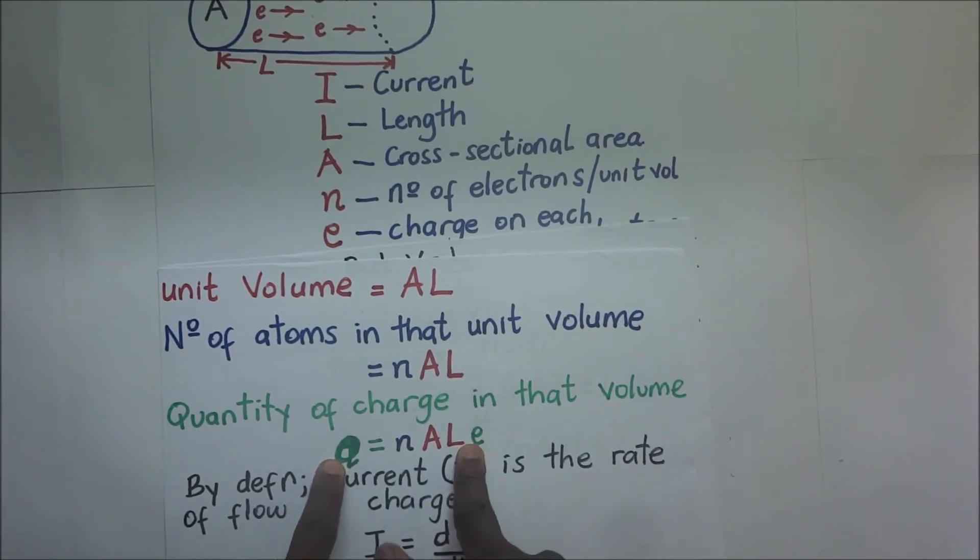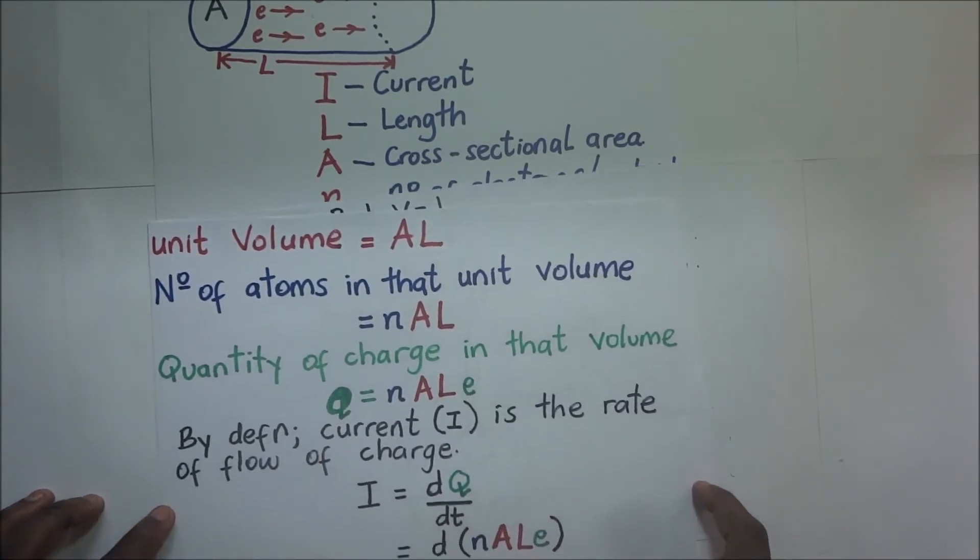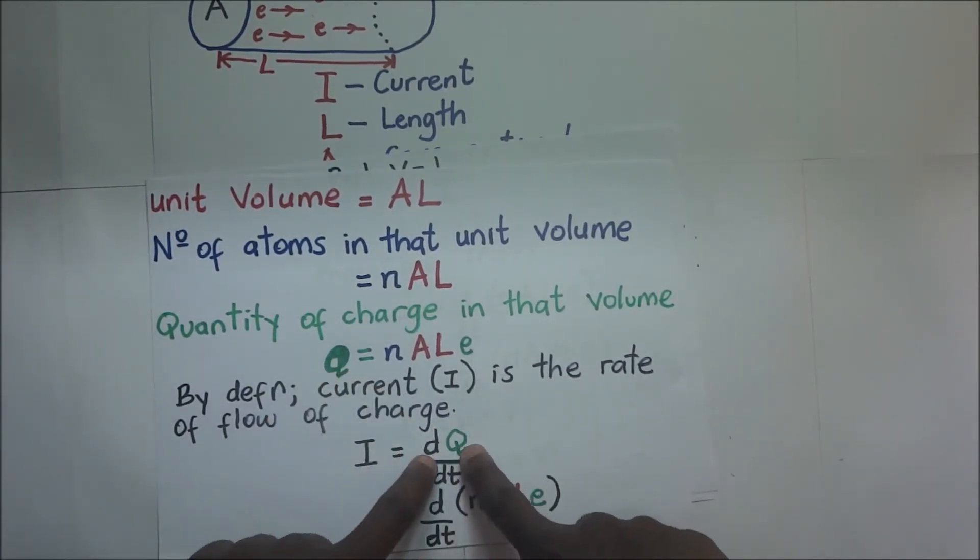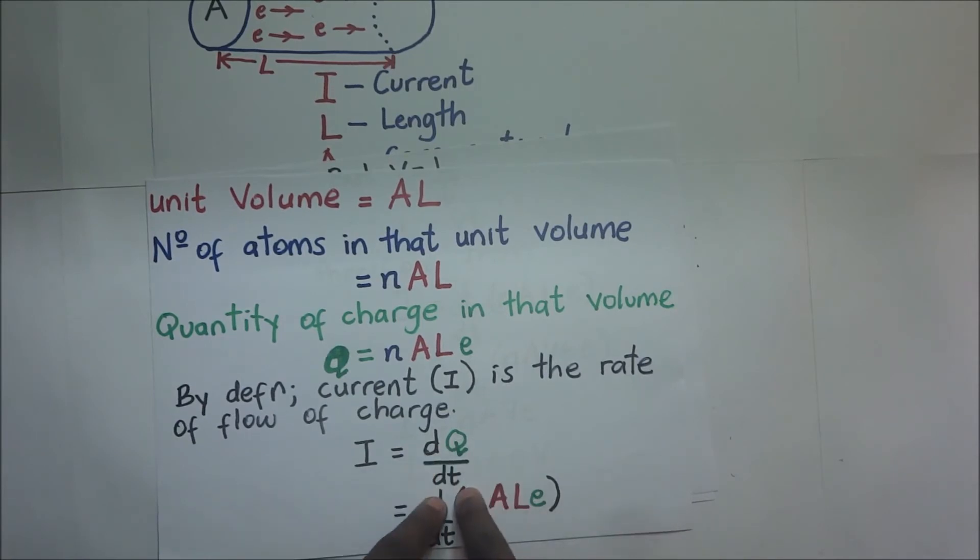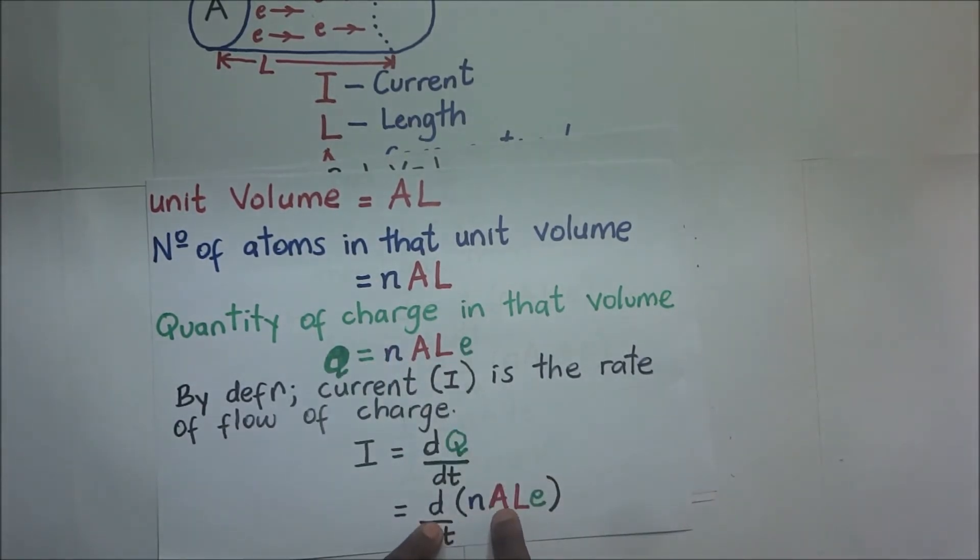Remember, we said that E is the charge on each atom in the volume. So it's going to be N times A times L times E. And now since Q, this is the total charge, which is Q equals that, then by definition, the current is the rate of flow of charge. So current is the rate of flow of charge, which is dQ/dt.